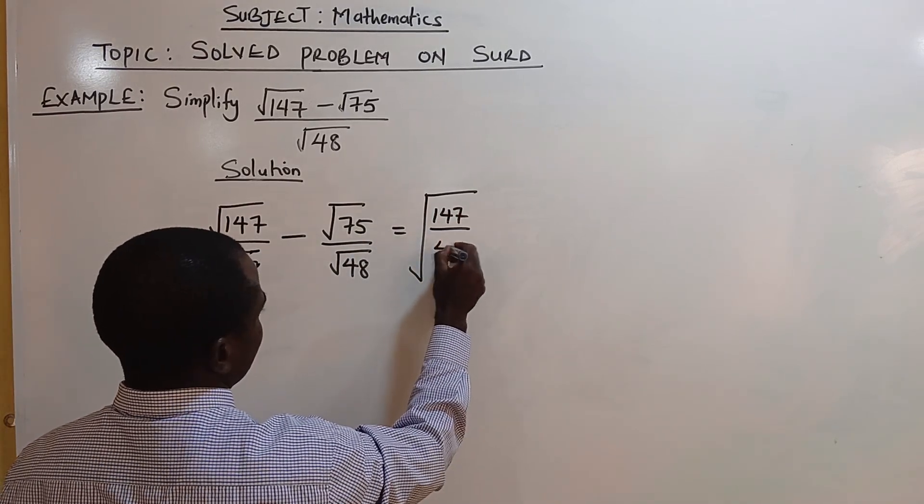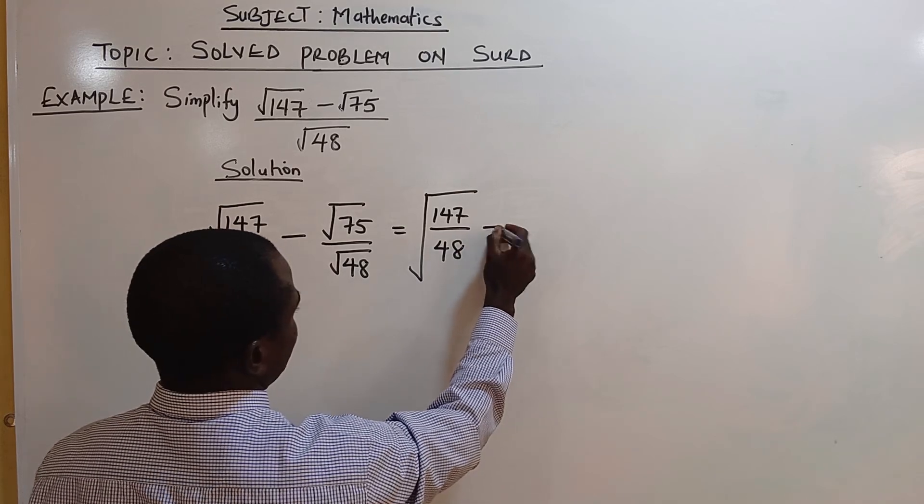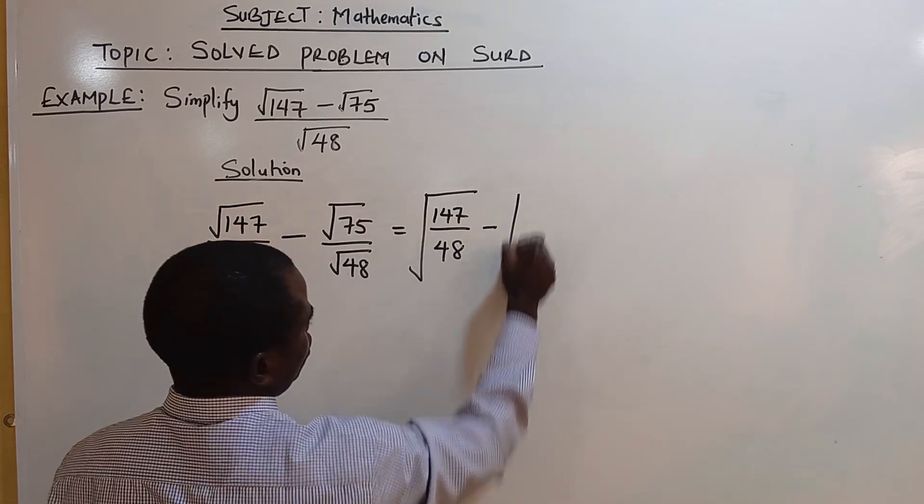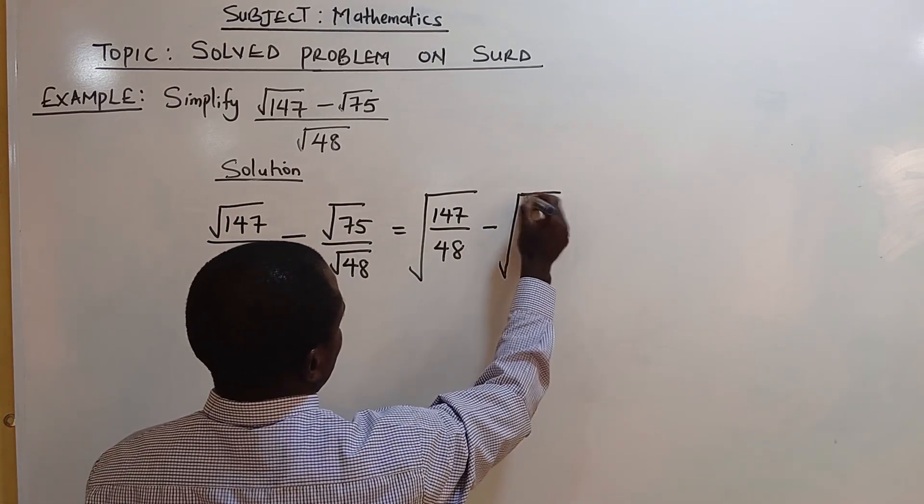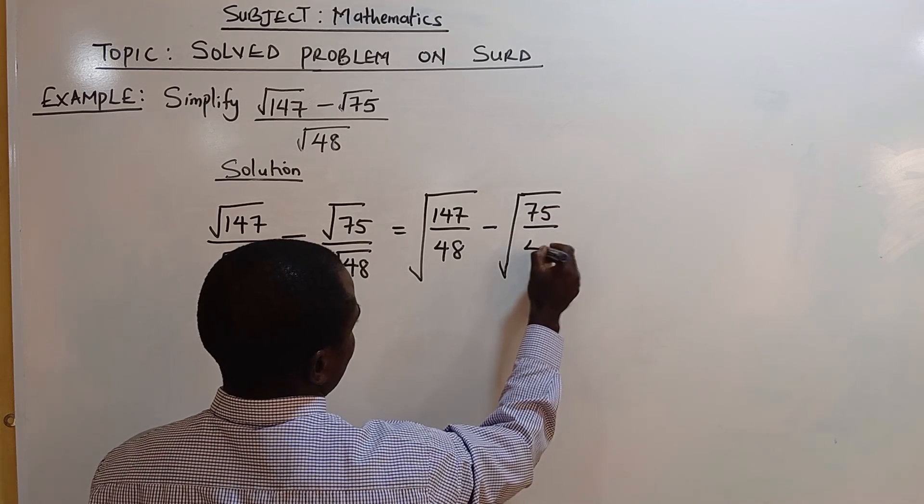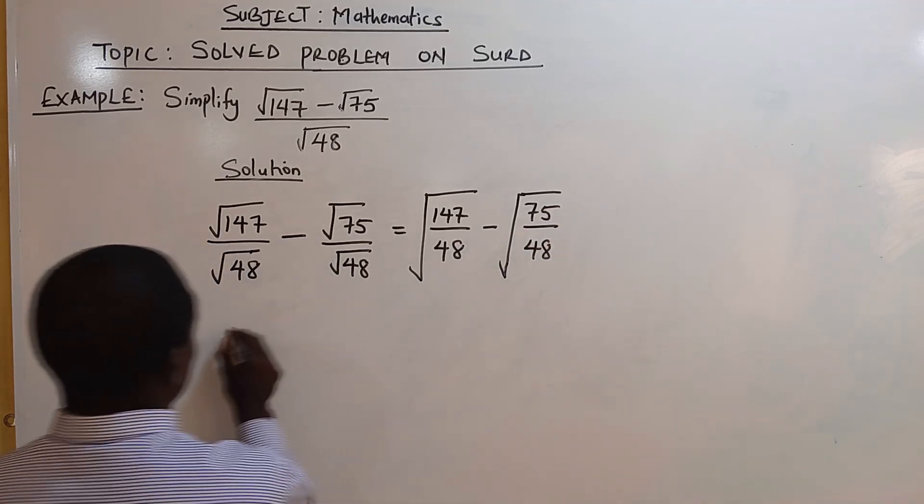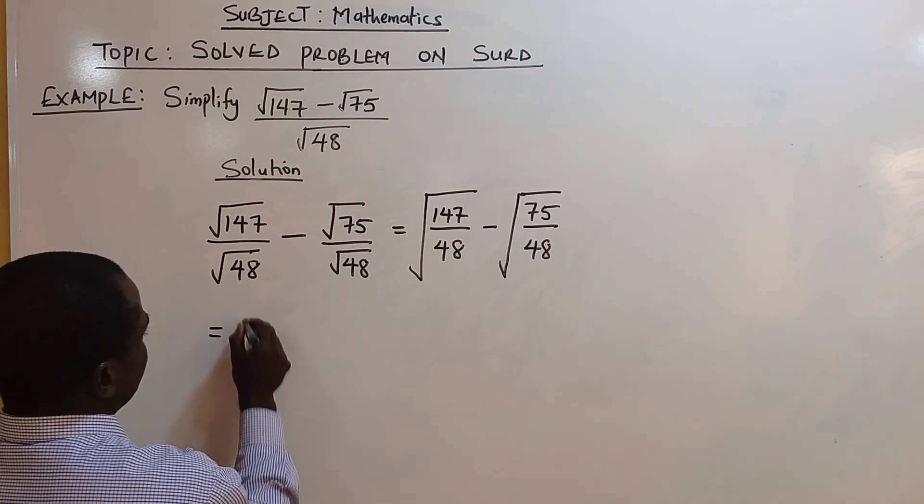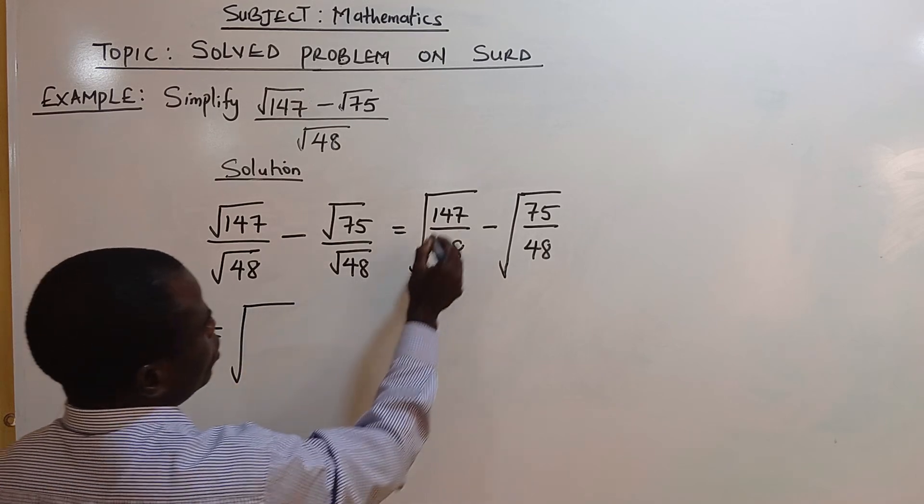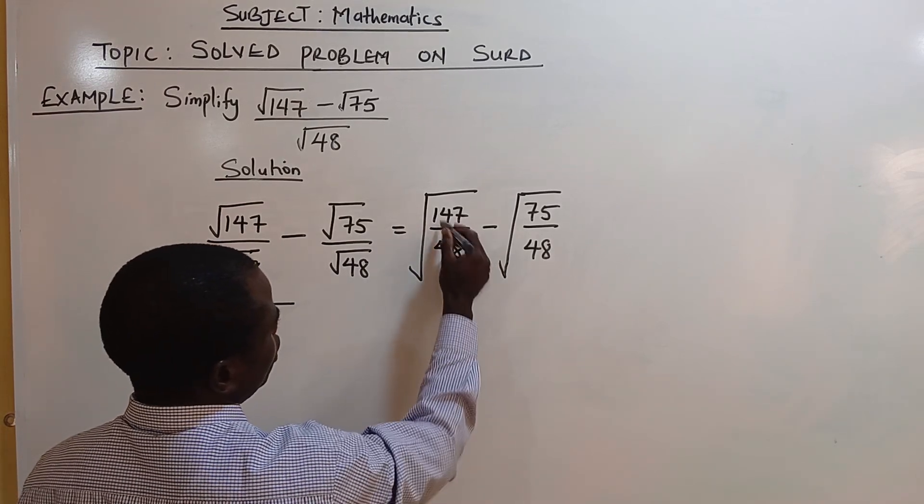We have square root of 147 over 48 minus square root of 75 over 48. What goes here and here, what can divide the two...